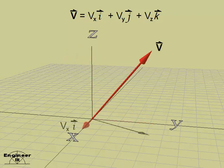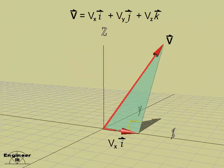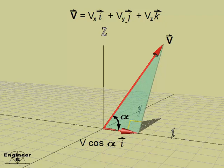To compute the magnitude of the x component, vector v is projected onto the x-axis. Notice the right triangle in the plane formed by the two vectors. By referencing the angle between the vectors, which is the directional angle alpha, the x component of vector v may be calculated using the cosine of alpha, which is the directional cosine of vector v.